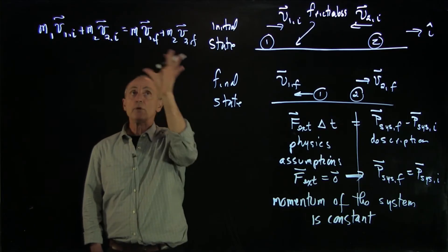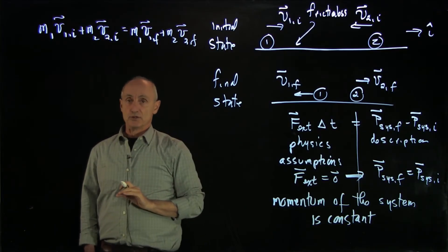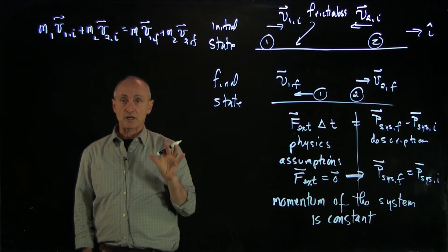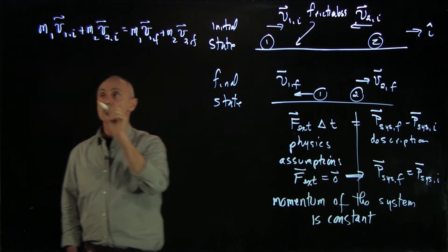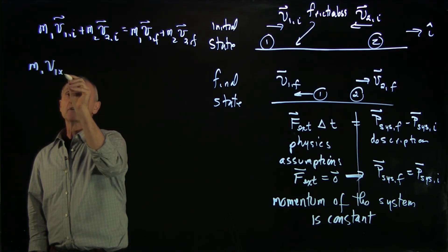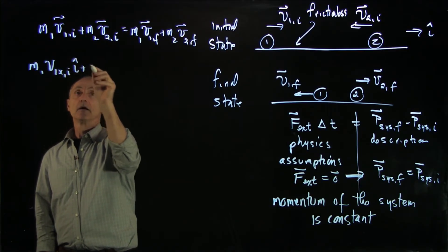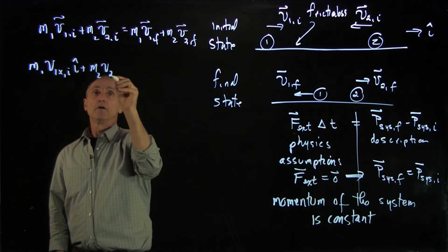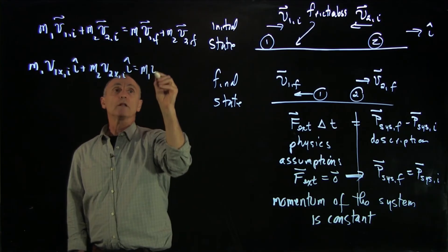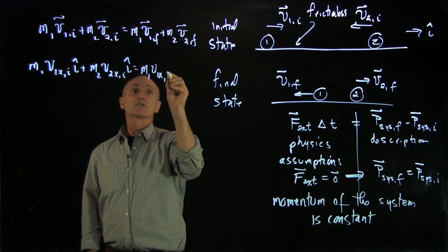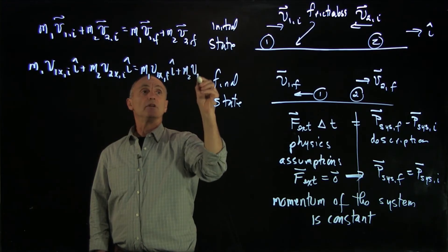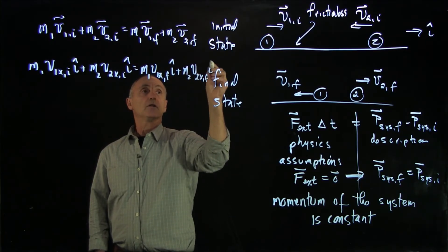Now how do we represent these equations? Well, you could treat them as vectors if you wanted, but what we're going to do is express them as components. So if we wrote this as components, we would have m1 vx initial i hat plus m2 v2x initial i hat equals m1 v1 x final i hat plus m2 v2 x final i hat.